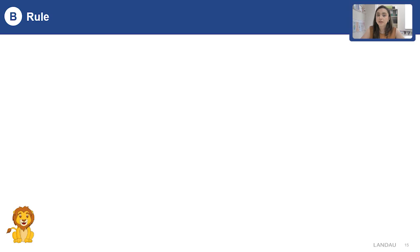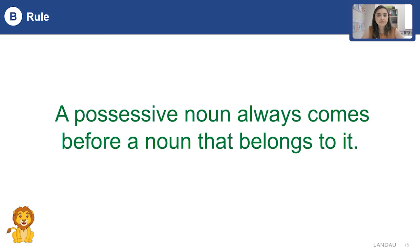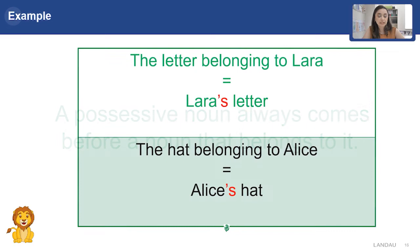Pay attention to the exercise again. I think you have noticed that a possessive noun always comes before the noun it belongs to. So, first you write who is the owner and then what they own. For example, the letters belonging to Laura — if we change it to possessive case, we will write Laura's letters. Or the hat belonging to Alice — if we use possessive case, we will write Alice's hat.